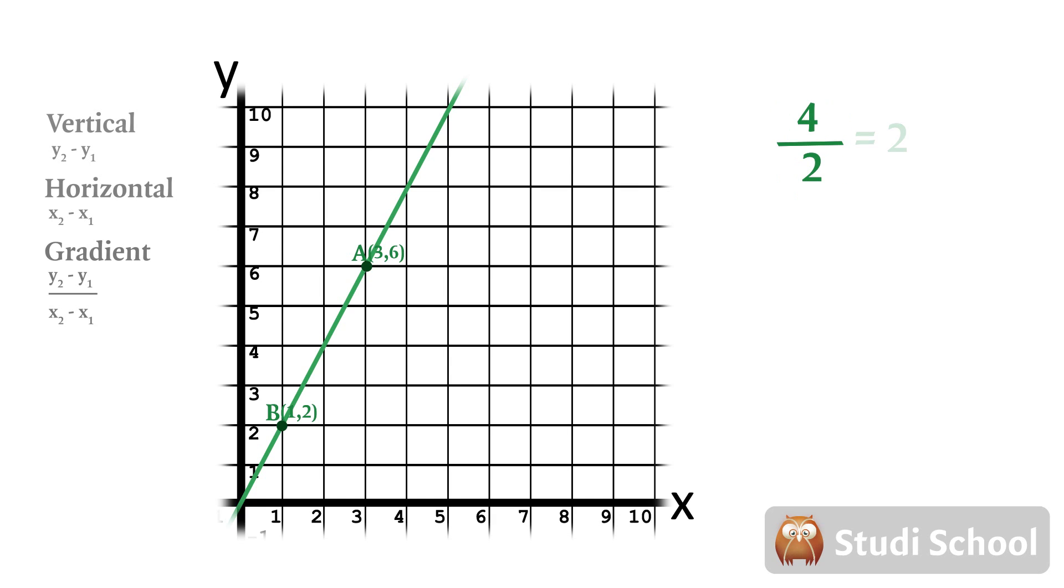Do the subtractions and the division and you get the value 2. The gradient of the line a b is 2. Gradients are often represented by the letter m so we'll write it as m equals 2. It means that for each one step forward the line goes up two steps.